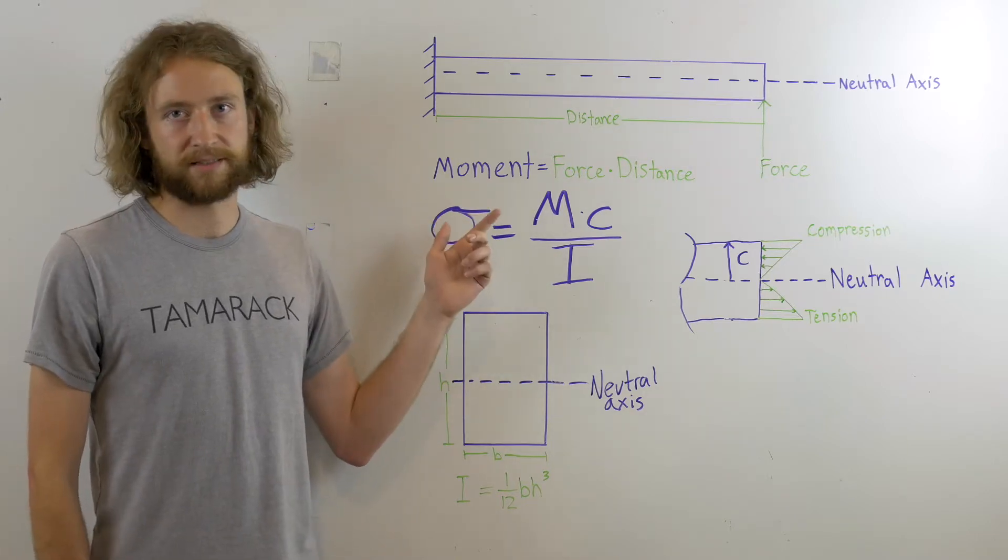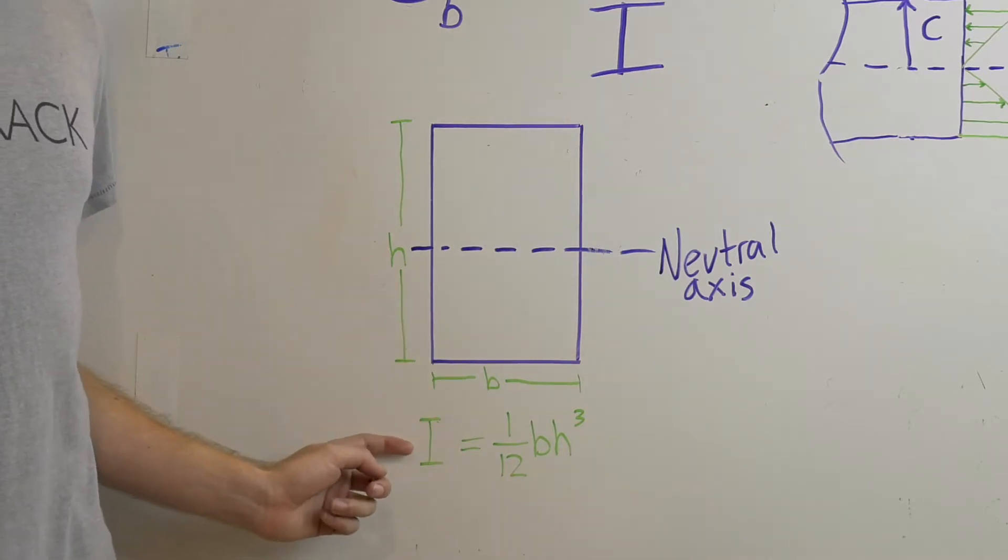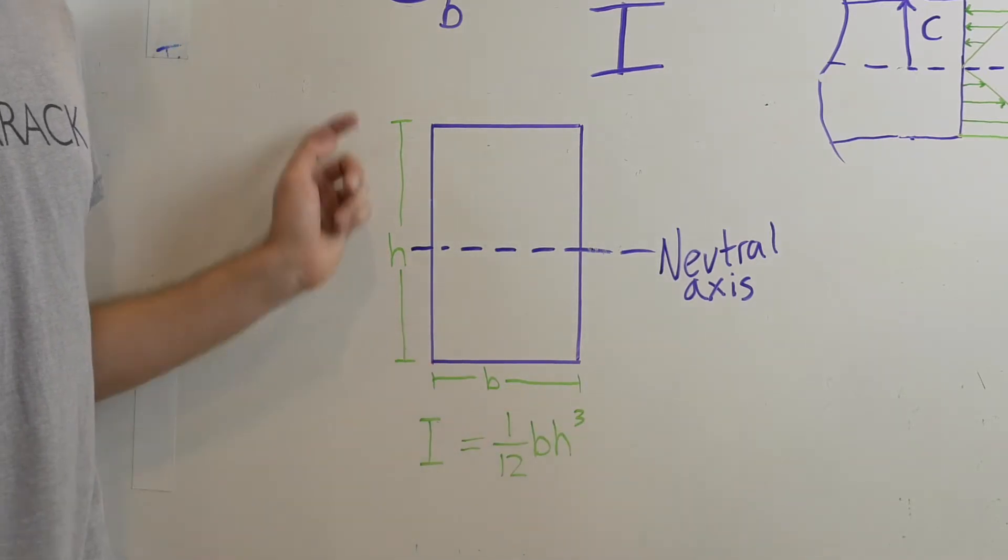For this simplified example we are just going to use a rectangle which has a moment of inertia equal to one twelfth times the base times the height cubed.